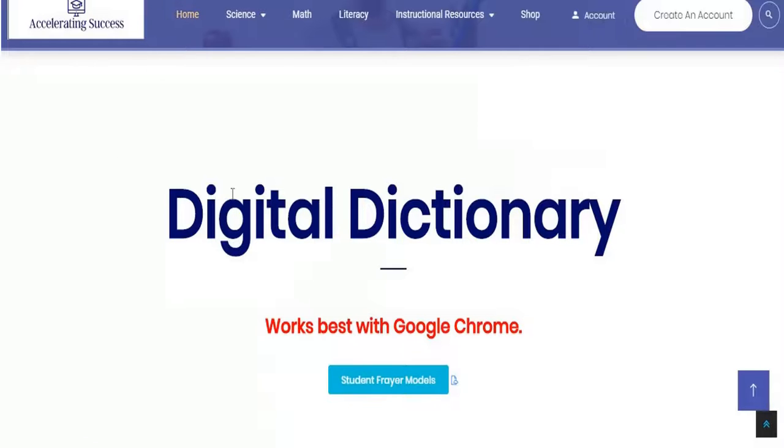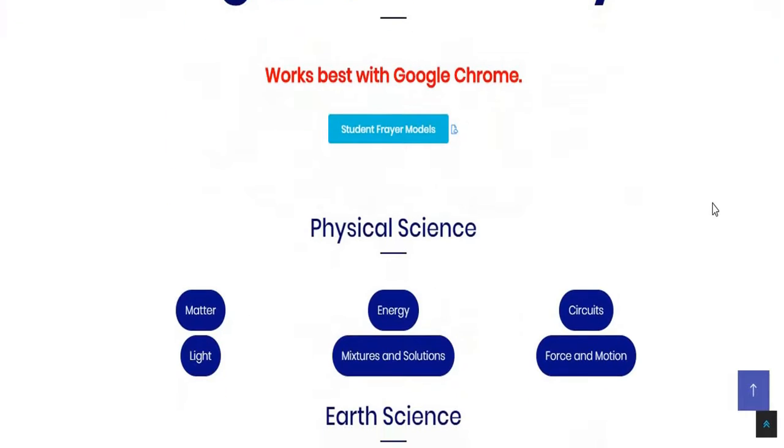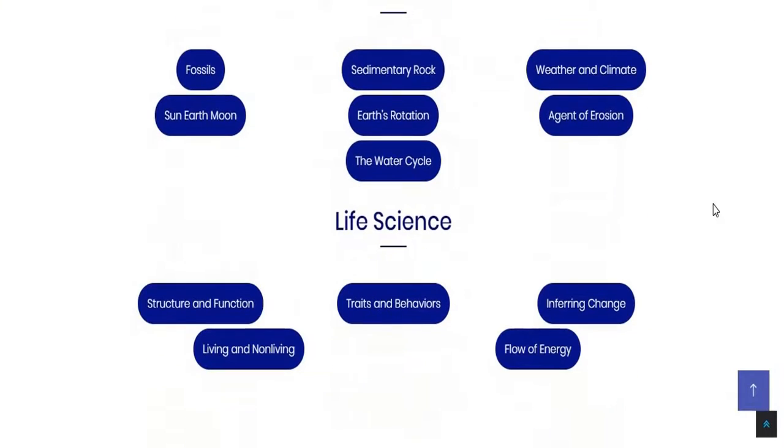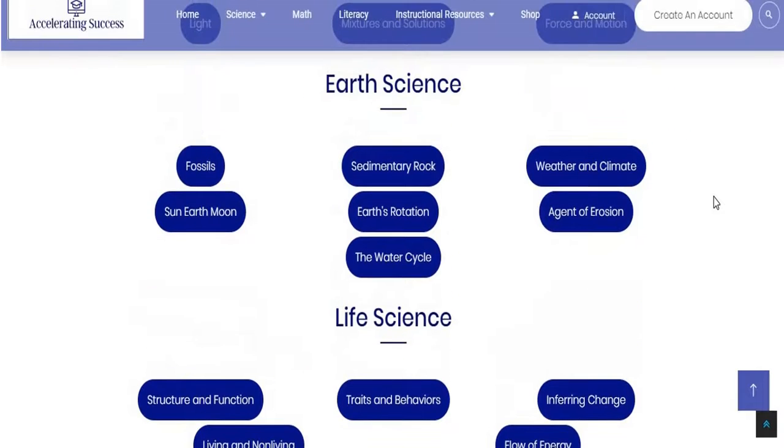What is the Digital Dictionary? It is an online dictionary broken down into physical, earth, and life science, and it includes all of the vocabulary words, including supplemental vocabulary words.